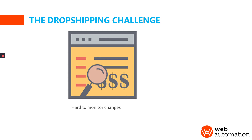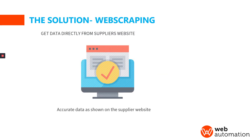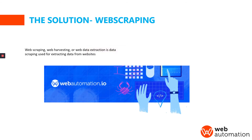Now the solution is web scraping. If anyone knows what web scraping is, it's quite a common thing now. It's a way where you can extract data from a website. The official definition from Google says web scraping, web harvesting, or web data extraction is data scraping used for extracting data from websites. Essentially, it's just an automated way to extract data from a website.